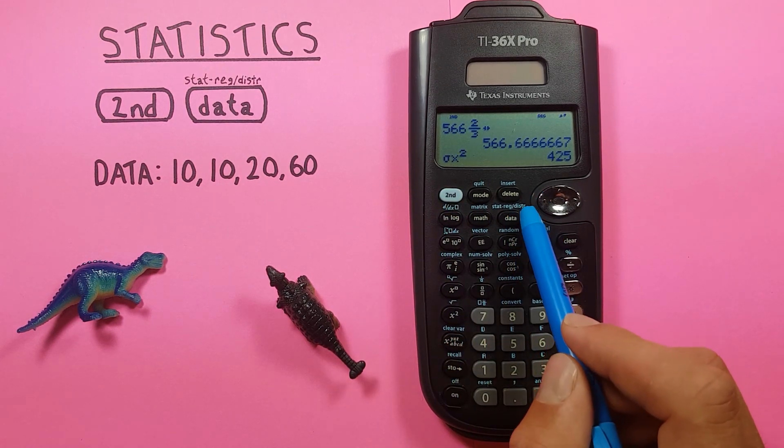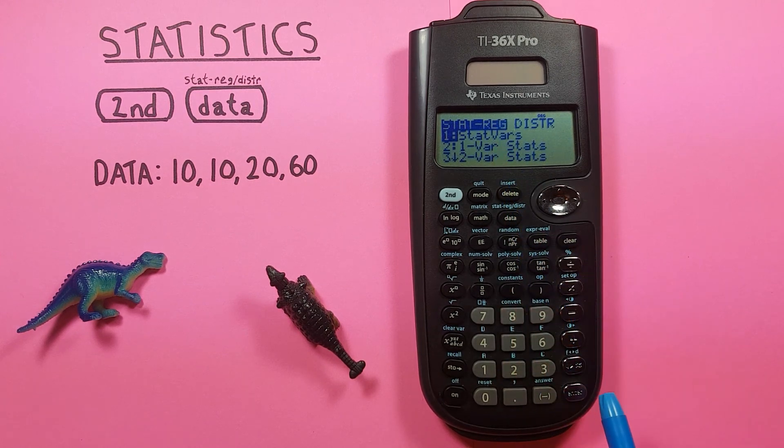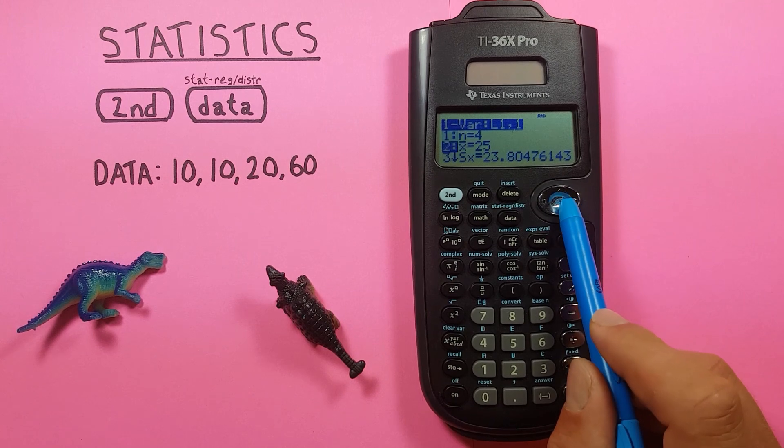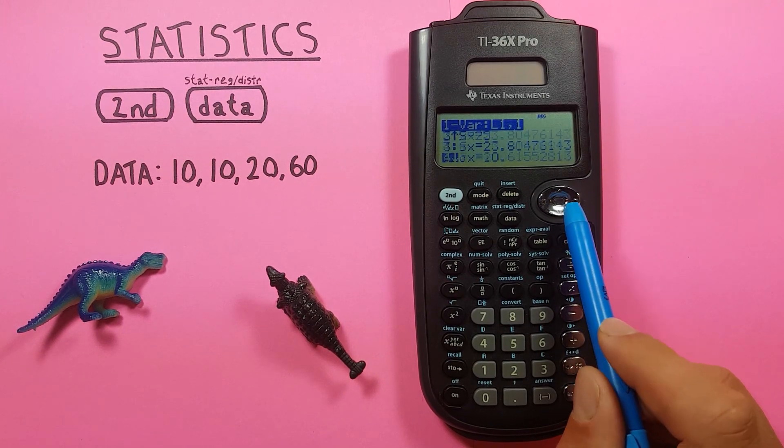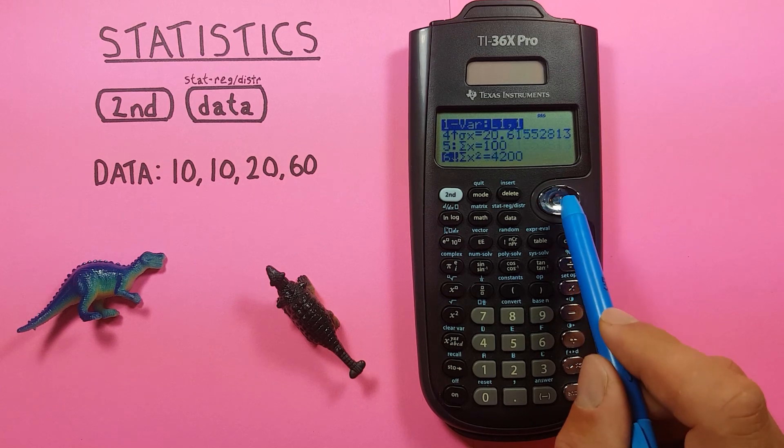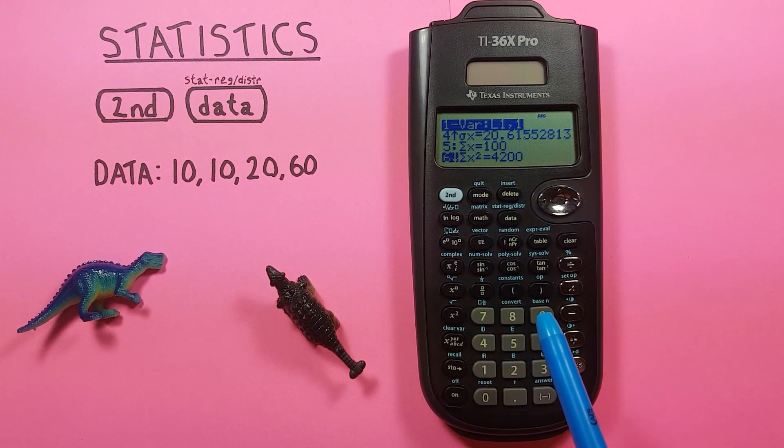Again back to our data, second function data and choosing number one there. Then we get a sum of 100 for our data, a sum squared of 4200.